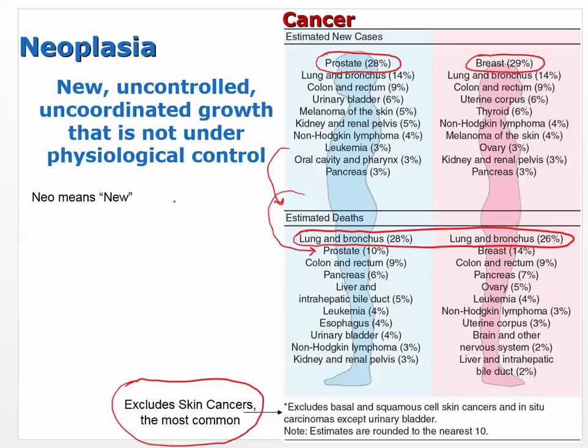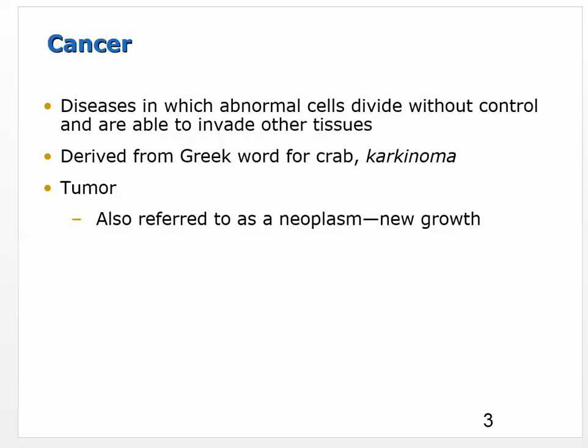Cancer in general is a disease in which abnormal cells divide without control and are able to invade other tissues. It's derived from the Greek word for crab. A tumor, also referred to as a neoplasm, is a new growth — tumors can be benign or malignant. Cancer is predominantly a disease of aging because it takes several mutations to develop.